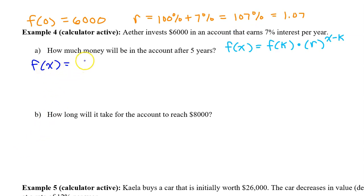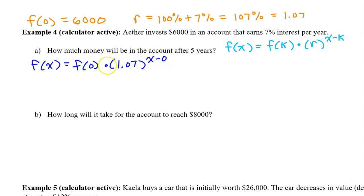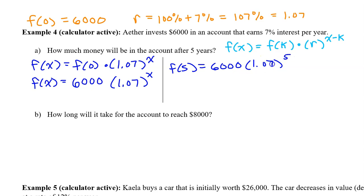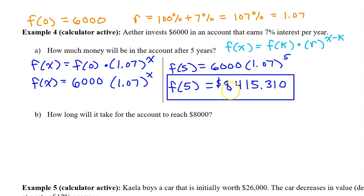Now we can write an exponential function for the value of Aether's account. f(x) equals f(k), which is f(0), times the common ratio r, which we found to be 1.07, to the x minus k power. But this will be x minus 0, which is just x. f(0) is 6,000, so the function becomes f(x) = 6,000 times 1.07 to the x power. Now we can find f(5): that will be 6,000 times 1.07 to the 5th power. Just type that into your calculator and you find that Aether will have $8,415.31 in 5 years.